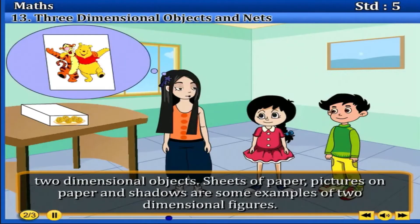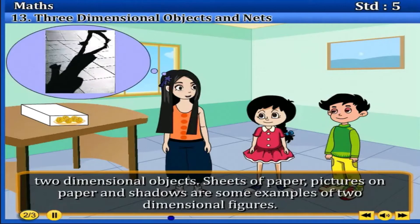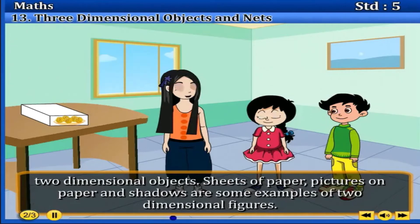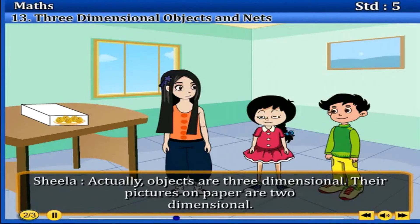Objects which have only length and breadth and no thickness, or negligible thickness, can be called two-dimensional objects. Sheets of paper, pictures on paper, and shadows are some examples of two-dimensional figures. Sheena added, 'Actually, objects are three-dimensional. Their pictures on paper are two-dimensional.'